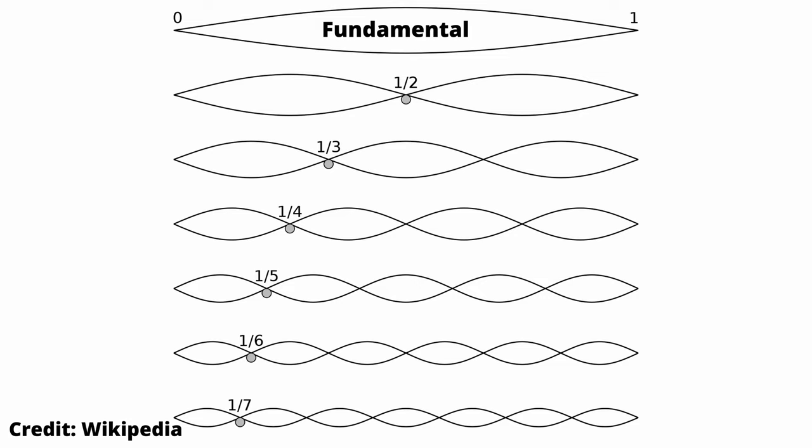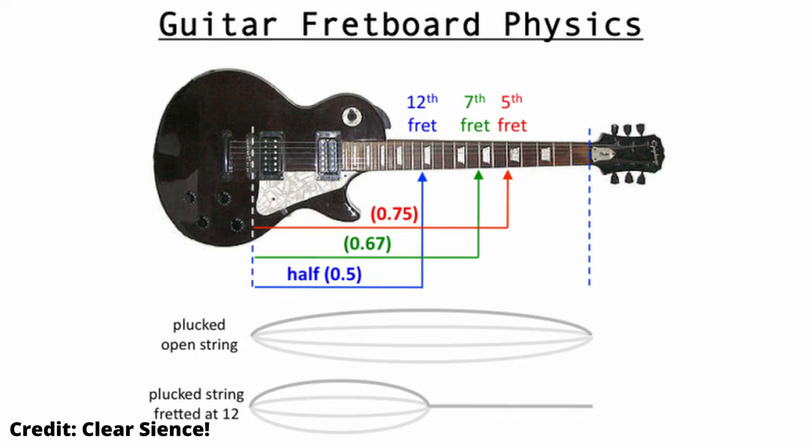If we look at this figure, the fundamental is set to one. The first overtone has a ratio of a half, the second a third, etc. The shorter the wavelength, the higher the frequency. Imagine a guitar string — the twelfth fret is placed exactly in the middle of the string, and that note will be an octave above the fundamental, the open string.